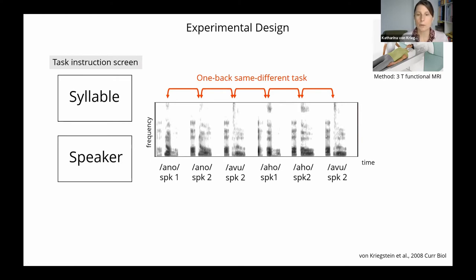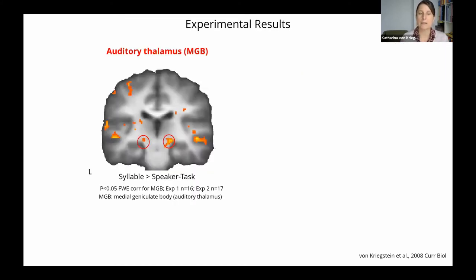So if we assume that the sensory pathway nuclei just provide bottom-up information to the cerebral cortex, we would not expect that there will be differences between the syllable and the speaker task in the activation of these nuclei. But what we found is that actually the syllable task leads to higher responses here in the auditory thalamus than the speaker task.